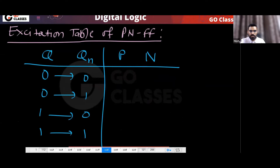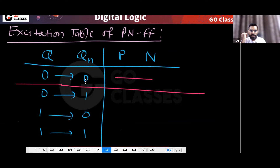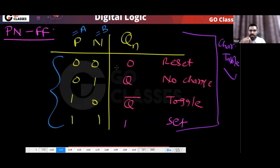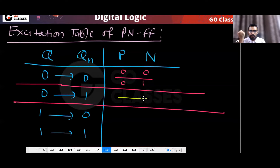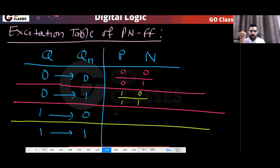So for the excitation table: going from 0 to 0 — reset is P-N = 0-0, retain is P-N = 0-1, so P=0, N=don't care. Going from 0 to 1 — toggle is 1-0, set is 1-1, so P=1, N=don't care. Going from 1 to 0 — toggle is 1-0, reset is 0-0, so P=don't care, N=0. Going from 1 to 1 — set is 1-1, retain is 0-1, so P=don't care, N=1.